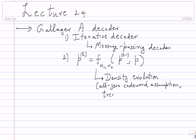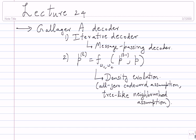Whenever you have a graph which has no cycles or closed loops, it's called a tree. Most density evolution that you do will depend on the all-zero codeword assumption and the tree-like neighborhood assumption. Today, with very recent work, it's possible also to do density evolution for some other scenarios. But it's way more complicated than what we can do in a class. This is the standard density evolution out there.